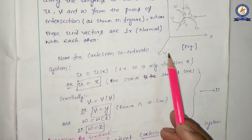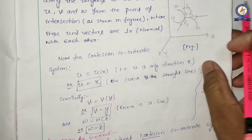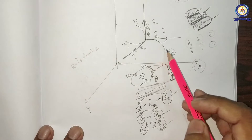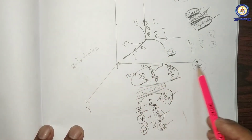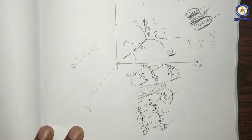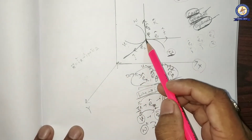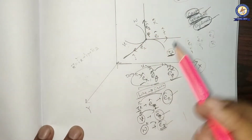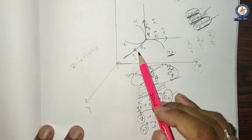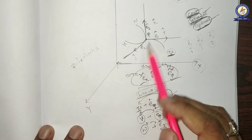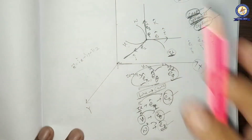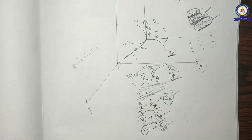For the Cartesian coordinate system, as discussed in our previous class, the u curve can be a straight line parallel to the x-axis, the v curve will be another straight line parallel to the y-axis, and w is also a straight line. If this straight line is a curve, then the tangent to this curve itself is this direction, meaning its unit vector will be i cap; j cap for the v curve; and k cap for the w curve, which is perpendicular.